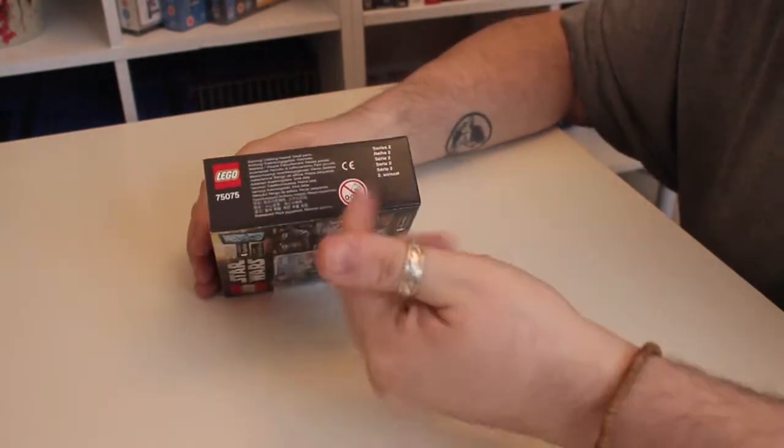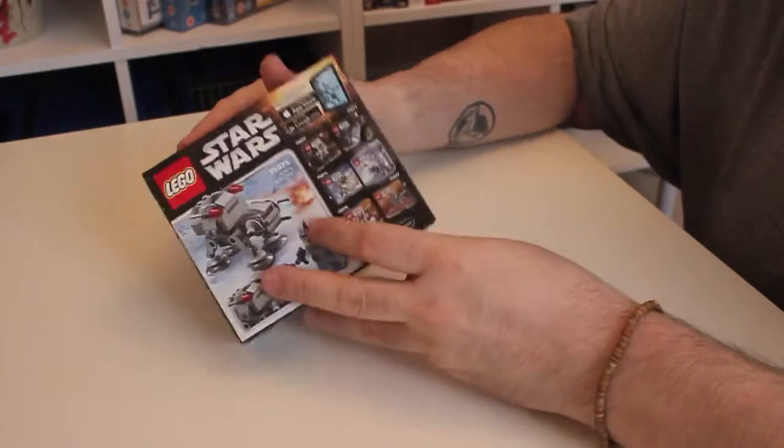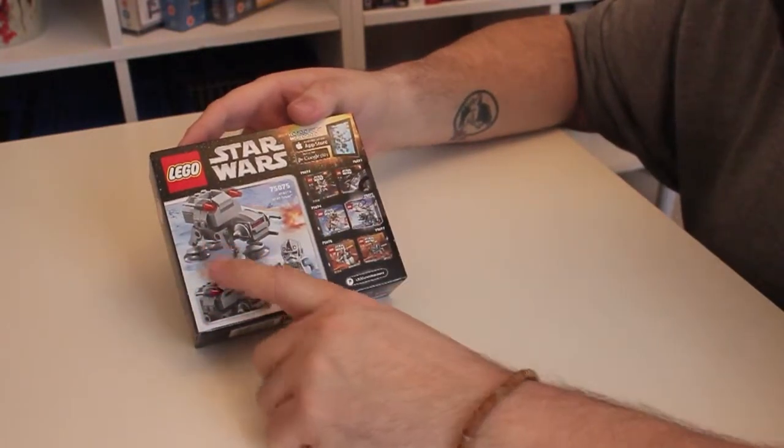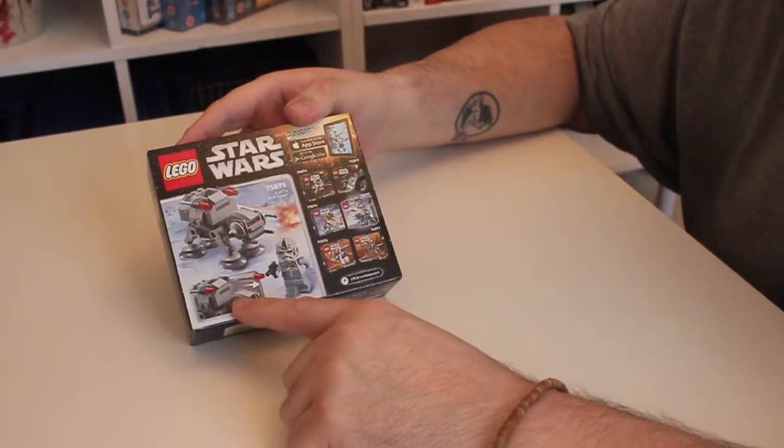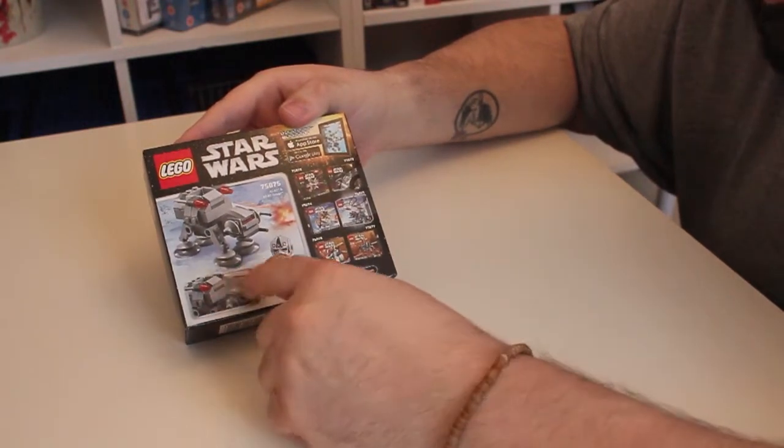On the side, usual warnings, what have you. On the back, you've got another view of the AT-AT and the driver separately, it shows you the weapons and how they fire.